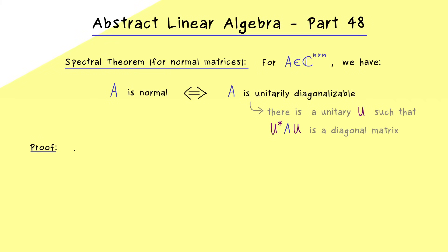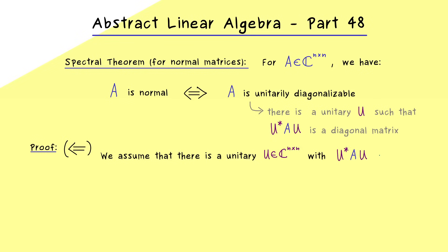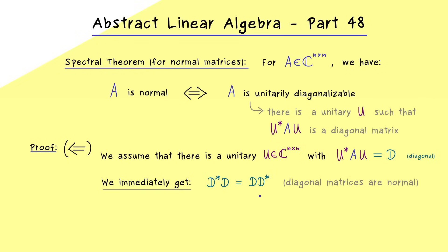Let's first formulate the simpler direction, which means we go from right to left. We already assume that we can find such a unitary U to transform A into diagonal form, and we can write D for our diagonal matrix. We immediately get that this diagonal matrix is clearly normal as well. There is not much to show because D* is a diagonal matrix and D* D equals D D*, since everything is happening on the diagonal. Diagonal matrices always commute because we only have to deal with the complex numbers on the diagonal, and of course we have the commutative property for complex numbers as a number field. This translates immediately to our matrix A because we have this relation.